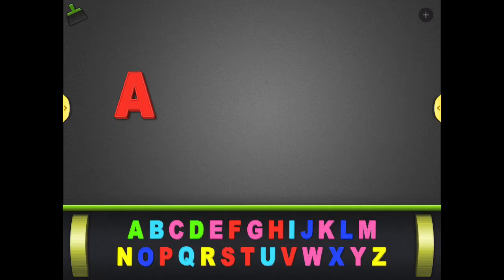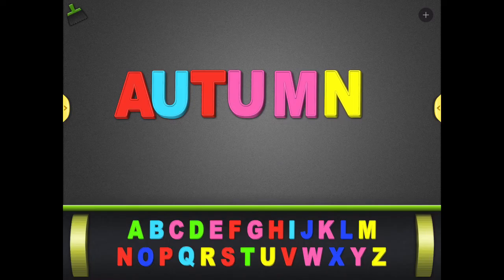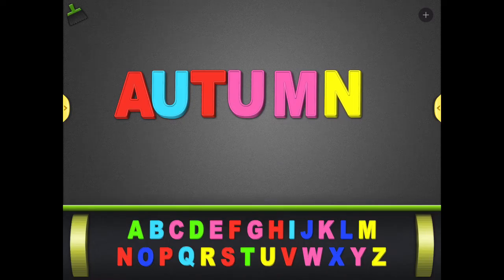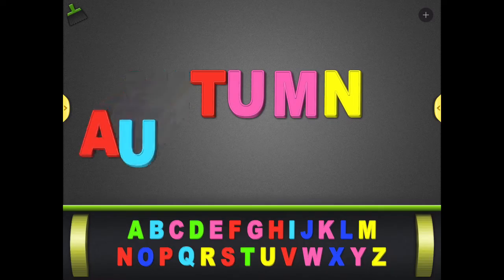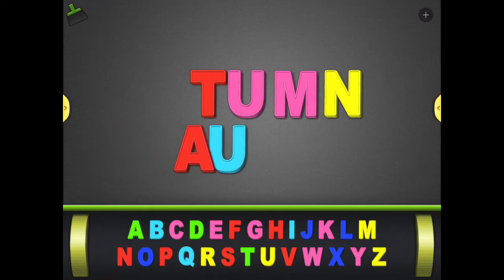Here's a new letter combination. The word autumn uses what letters to make the aw sound? It's the A and the U. Can you think of another word that uses A and U to make the aw sound?